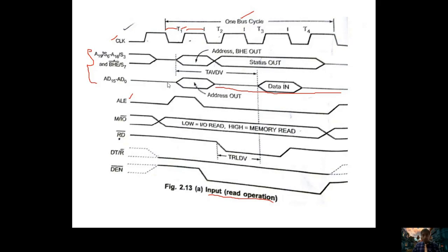ALE must be high during the first part of the machine cycle — that is, during T1 only. For every machine cycle, during T1 time ALE is high. ALE takes the multiplexed address and data lines and makes them into pure address and data lines. After T1, ALE takes multiplexed address and status lines and produces pure address lines and status lines. Similarly BHE̅/S7 is separated. After T1 ALE goes low for the remainder of the cycle.